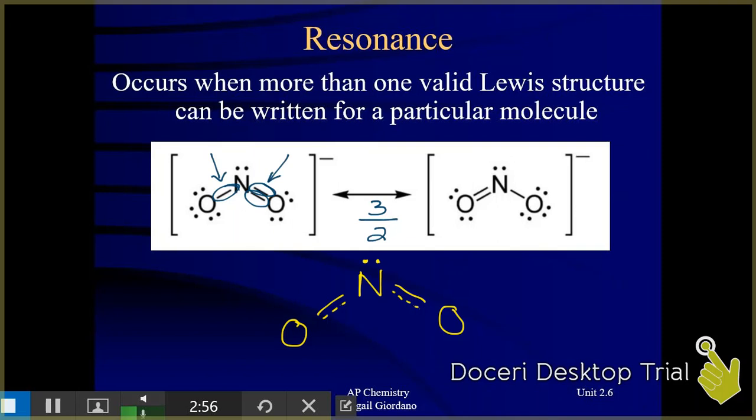A couple of lessons back I told you about this term, bond order. This is a term that comes in handy when we talk about resonance. This nitrogen to oxygen bond has a bond order of 1.5, and that is a totally valid thing for you to say on the AP exam.